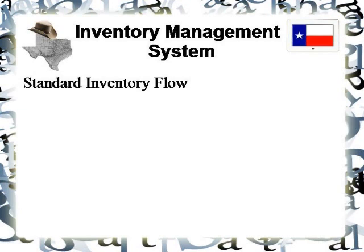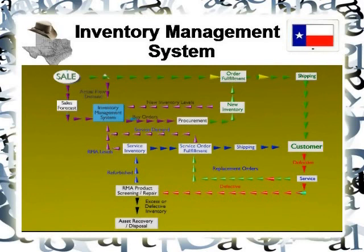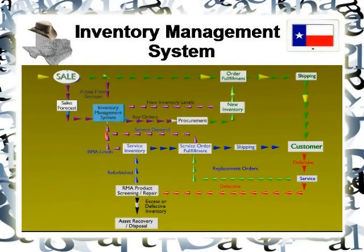As any decent engineer or developer can tell you, before laying down the first piece of steel to build a ship, or writing the first piece of code to a program, you need to know what the form and function of your process looks like. In this case, we're looking at a standard inventory flow. If you stop the video and take a quick look at this flowchart, you'll notice there are a couple of items missing — for example, right after procurement, you would normally have vendors or suppliers, and they're not on the chart.